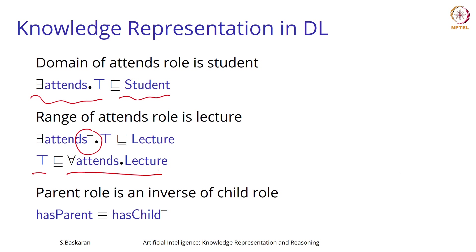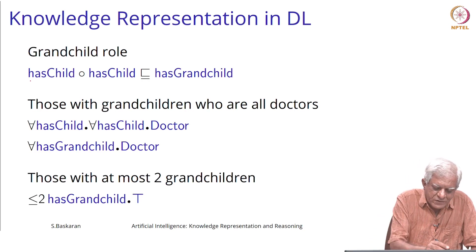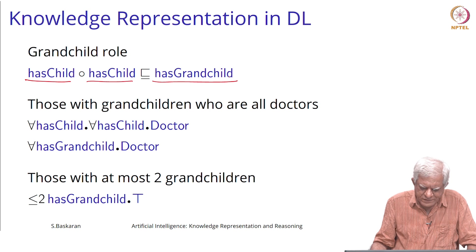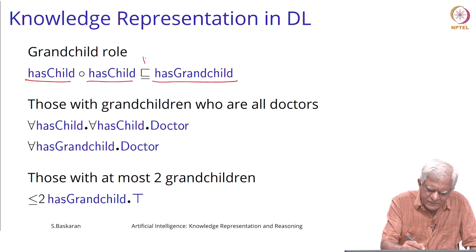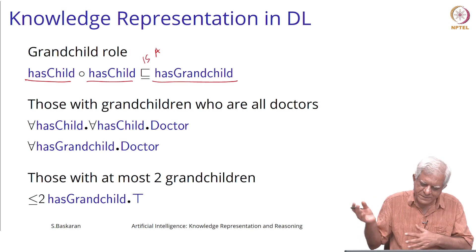We can have inverse roles: 'attends' and 'attends-inverse'. We can define the role 'has parent' as the inverse of the role 'has child'. 'Has child' says that somebody has a child; the inverse of that is somebody who has a parent. We have also spoken about 'grandchild': 'has child' composed with 'has child' gives 'grandchild'. You can think of this as a subsumption relationship in some sense, because you are saying for all x, something implies something else.